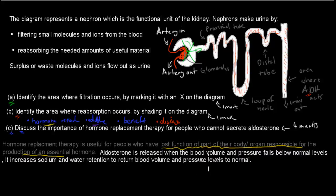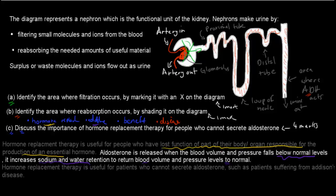Aldosterone is released when the blood volume and pressure falls below normal levels. It increases sodium and water retention, so that's what it does. And it does that to return blood volume and pressure levels to normal. So by having aldosterone, we can control our own blood volume and pressure levels.